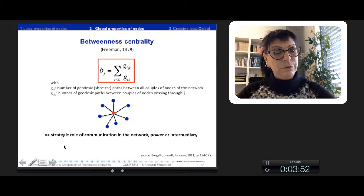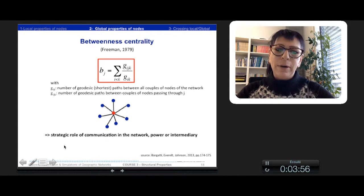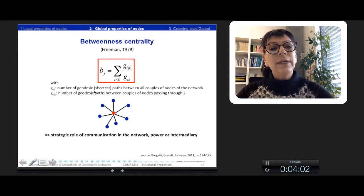Considering the whole network, the betweenness centrality is a very popular measure. So we take into account here the number of geodesic shortest paths, so between a couple of nodes passing through a node J. So we count all these shortest paths passing through J.